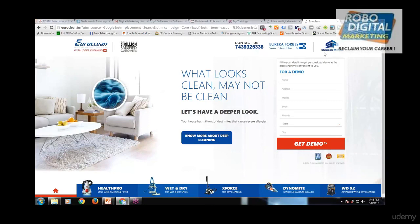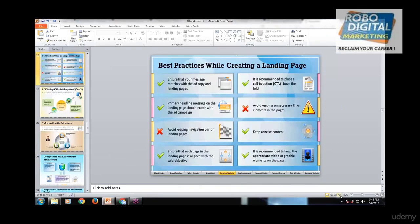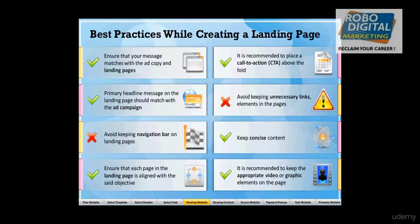A normal website page cannot restrict the user to only one page. So we avoid unnecessary links in the page elements. We do not give multiple links, and we avoid the navigation bar — no menu on the landing page — because we want to keep users on that page so they ultimately convert for us.